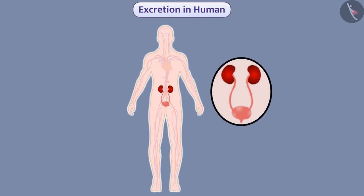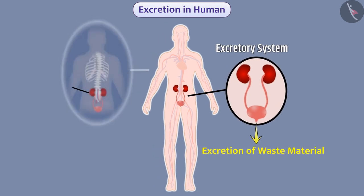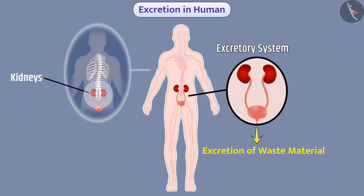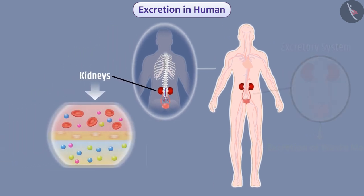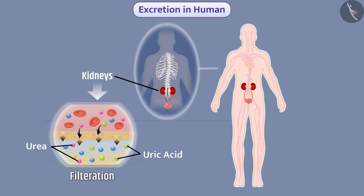In humans, excretion of waste material is done with the help of the excretory system. A pair of kidneys are located on the back side of the abdomen, on both sides of the spinal cord, with the help of which the nitrogenous waste — urea and uric acid — present in the human blood are separated by the process of filtration.